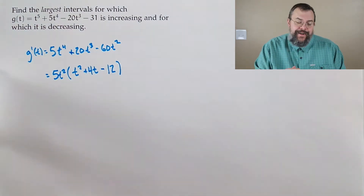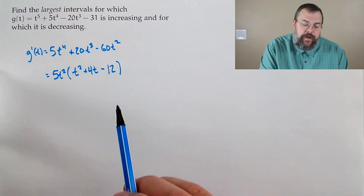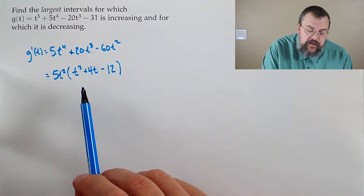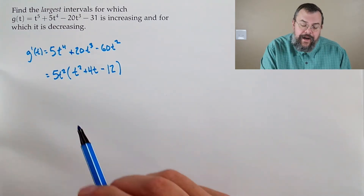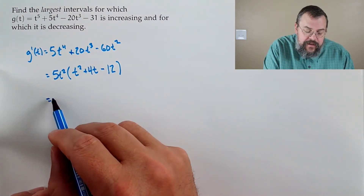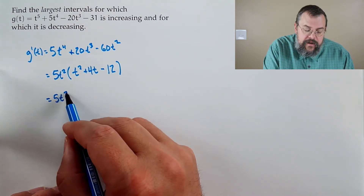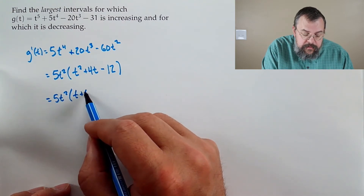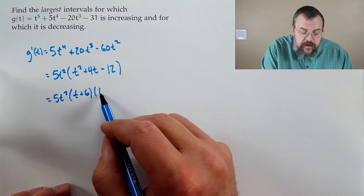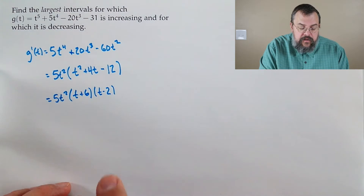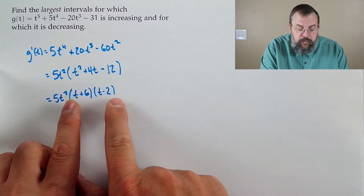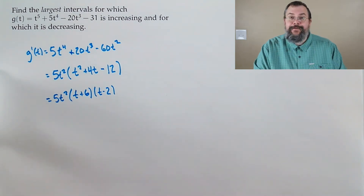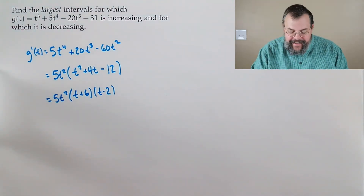We want two numbers that multiply to give negative 12 but add together to give 4. How about 6 and negative 2? Let's try it: (t plus 6)(t minus 2) gives t squared minus 2t plus 6t, that's 4t, and minus 12. It worked! So our derivative factors as 5t squared times (t plus 6)(t minus 2).